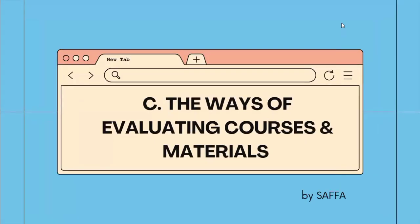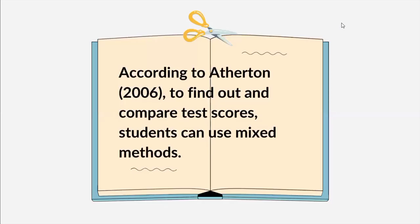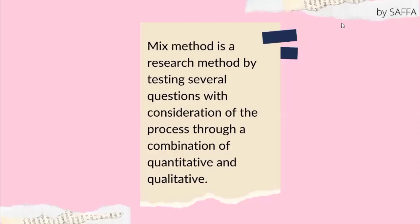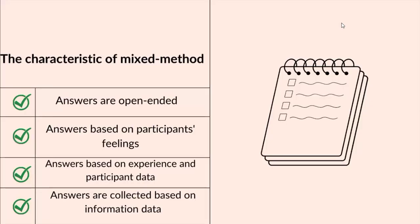Hello everyone, I am Safa Aulia Lestari, and I will present the ways of evaluating courses and materials. According to Adon (2006), to find out and compare test scores about students, we can use the Mixed Method. Mixed Method is a research method by testing several occasions with consideration of the process through a combination of quantitative and qualitative approaches. We have four characteristics of Mixed Method.